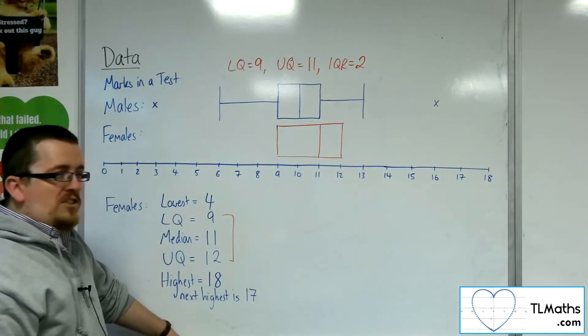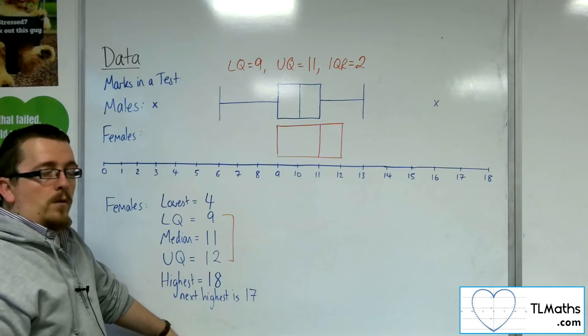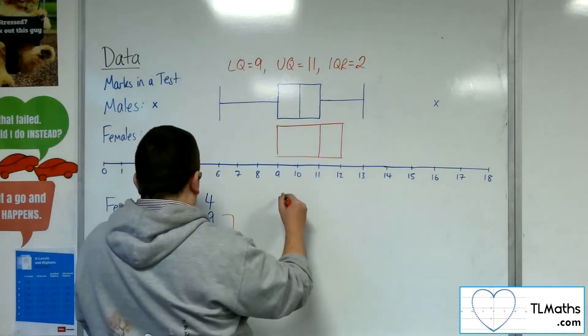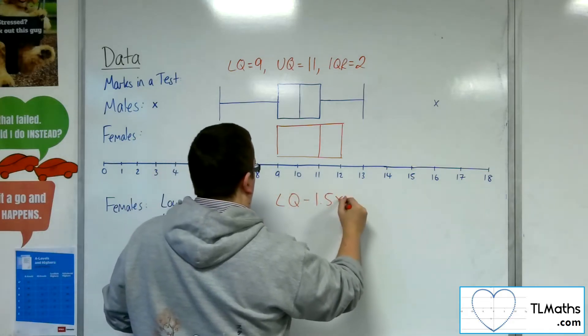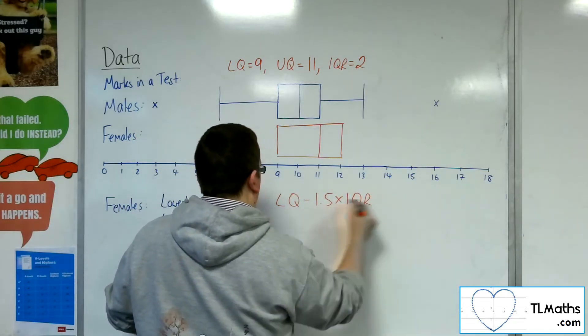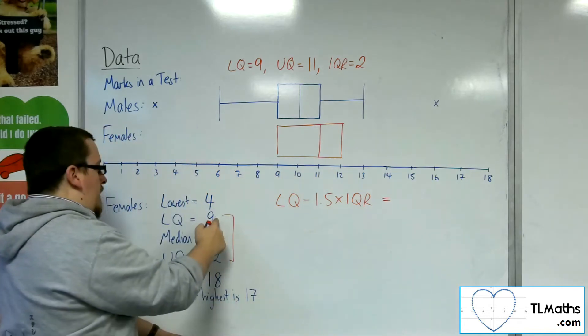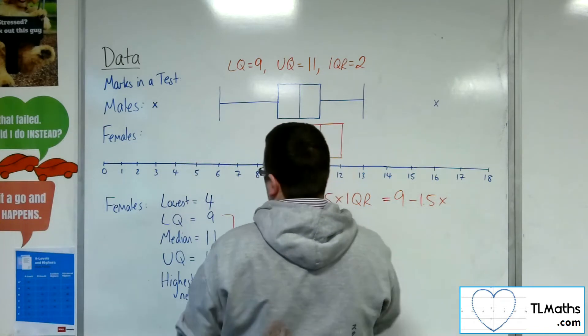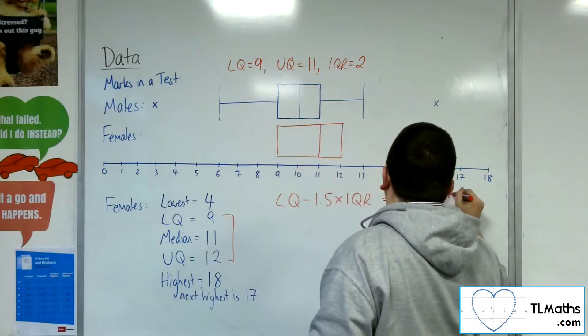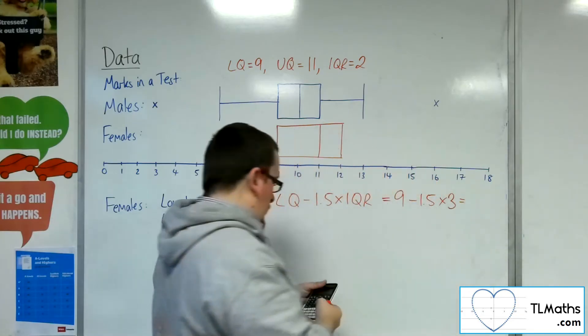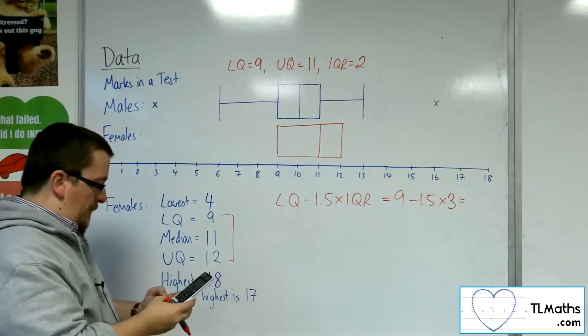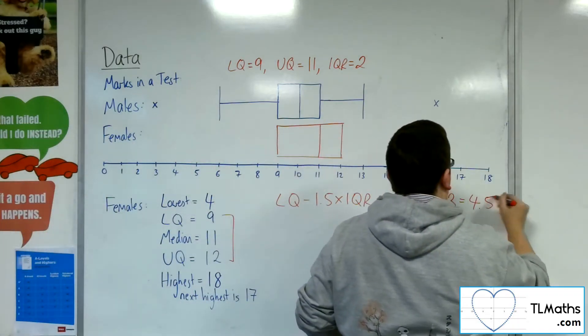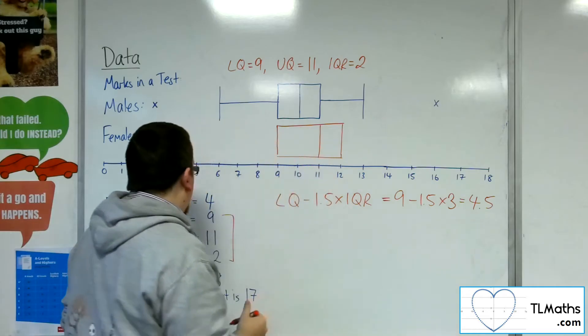So next up, I would figure out where the boundaries for the outliers are. So we want the lower quartile take away 1.5 times the interquartile range. Which is 9, take away 1.5 times the interquartile range, which is going to be 3. So 9, take away 1.5 times 3, is 4.5.